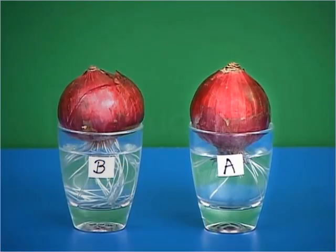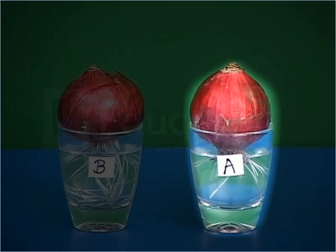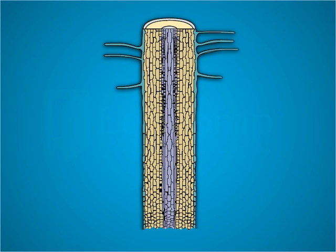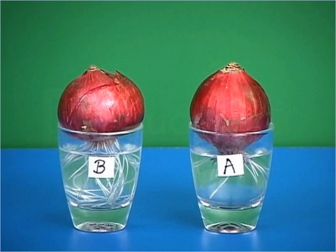While in the case of tumbler A, the root tip was cut, which resulted in the absence of the region of growth. Since meristematic tissue was absent, no cell division took place and hence the growth of roots stopped.